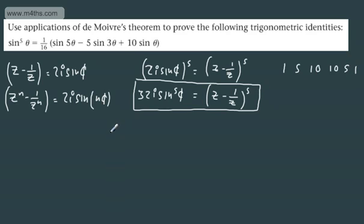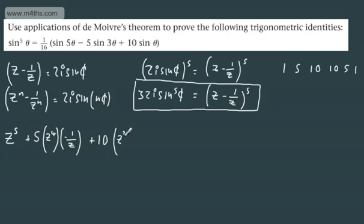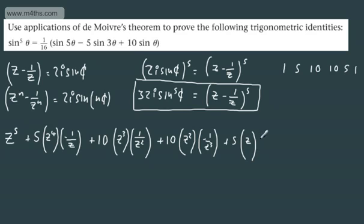Let's expand this out. It's vitally important to appreciate we've got a negative term here. So we're going to have z to the fifth, then plus 5 times z to the fourth times negative 1 over z, giving negative 5z to the fourth over z. Then 10 times z cubed times 1 over z squared, which is positive. Next, 10 times z squared times negative 1 over z cubed, which is negative. Then plus 5 times z to the first times 1 over z to the fourth. And finally negative 1 over z to the fifth. Remember: odd powers keep the negative, even powers turn positive.